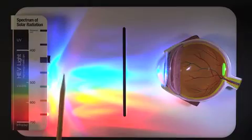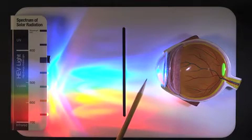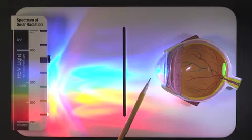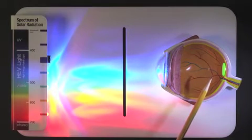You will notice the harmful light rays can pass right through the cornea and over time damage the retina. This is represented by the green light focusing on the back of the retina as seen here.